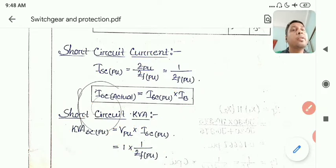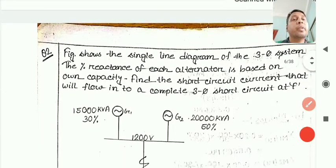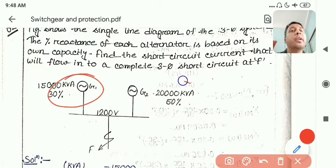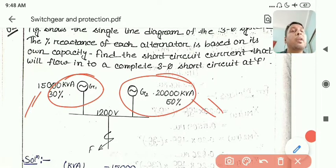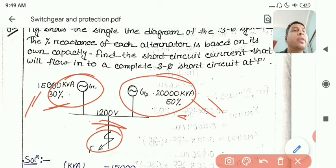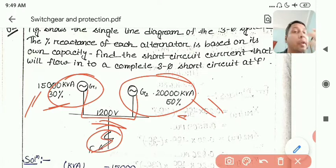In this numerical, two generators — Generator 1 and Generator 2 — are connected at different KV levels with given per unit reactances. There is a fault at the generator terminal. There is no transmission line, meaning it's a simple network with the fault occurring directly at the generator terminal itself, and no transformer is involved.